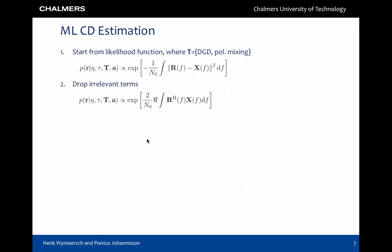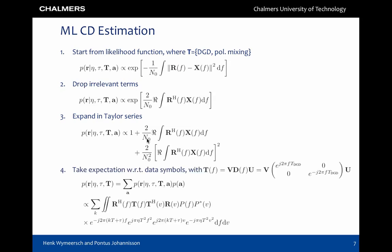Step 2. We expand the square and drop all irrelevant terms. Step 3. We expand the exponential in a Taylor series. Step 4. We take the expectation with respect to the data. Note that the second term in step 3 will be zero in expectation for any zero mean constellation, while the first term in step 3 is constant, so it can be dropped. We end up with a quite complicated expression.